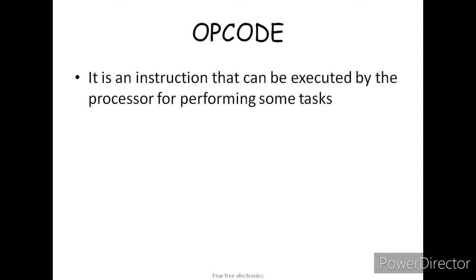What is an opcode? It is an instruction that can be executed by the processor for performing some tasks. For example, MOV — it tells what task to be performed, which is to move data from a memory location, I/O device, accumulator, or registers. Also, ADD is used for the addition process and SUB is used for subtraction.